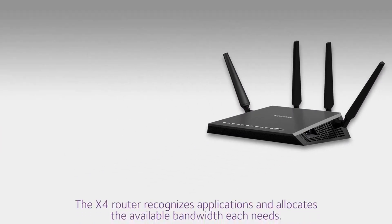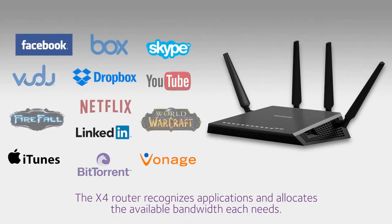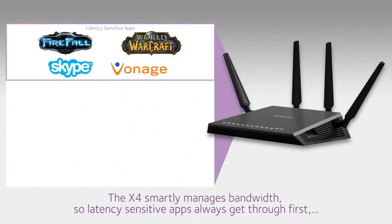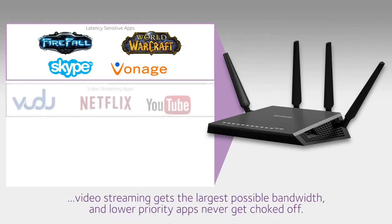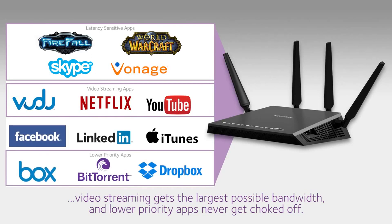First, the X4 recognizes applications and allocates the bandwidth required by each. The X4 smartly manages bandwidth so latency-sensitive apps always get through first. Video streaming gets the largest possible bandwidth, and lower-priority apps never get choked off.